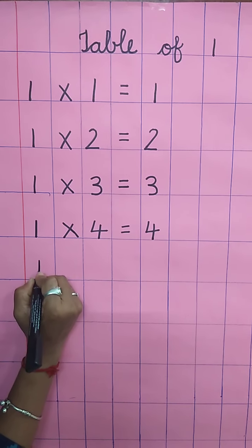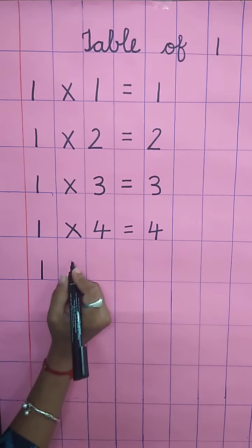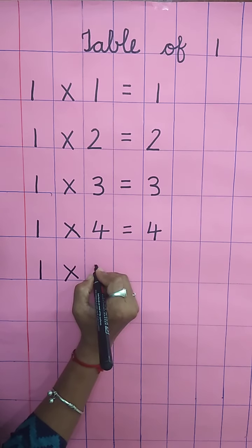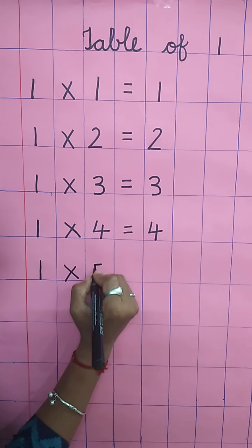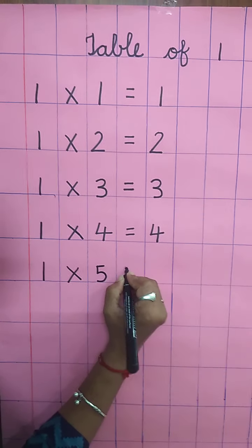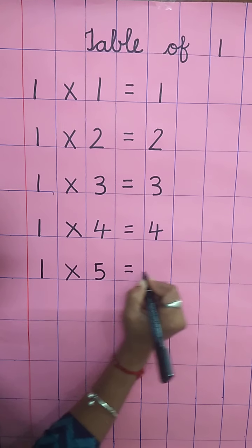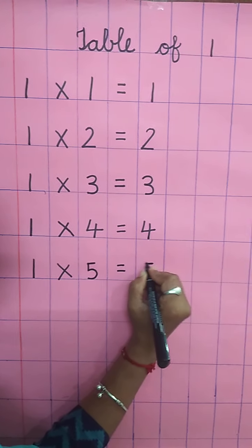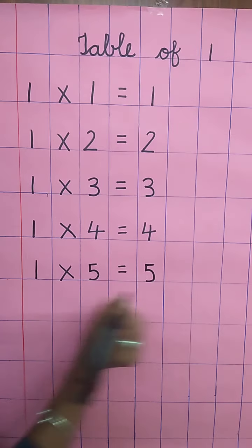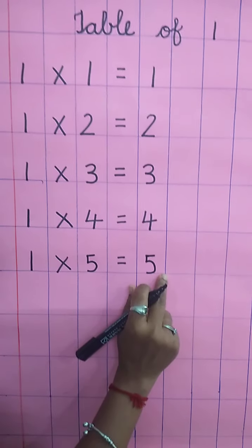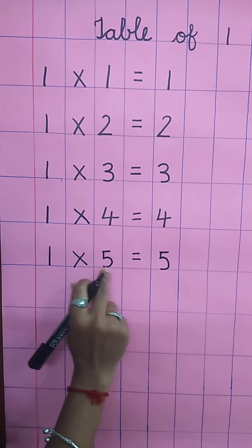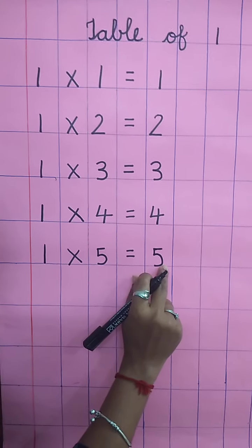You have to write. One, multiplying sign. Write down five. Equal sign. And write down five. One five's are five. One five's are five.